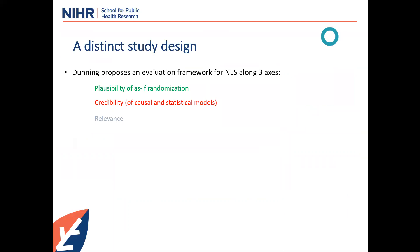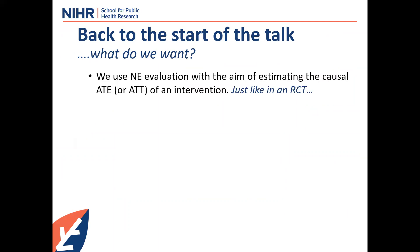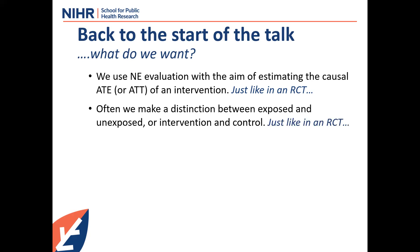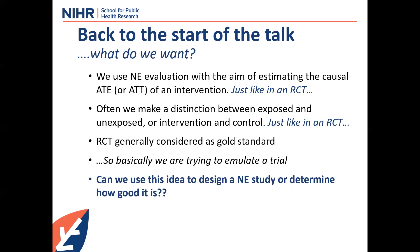That was the bit about as-if randomization. The second bit is the credibility of causal and statistical models. We use natural experiment evaluations to estimate causal effects — what we're trying to do with an RCT. The RCT is considered the gold standard, so what we're trying to do is emulate a trial as well as we can to make the strongest causal claim possible. Can we use this idea to improve the design and appraisal of natural experiment studies?